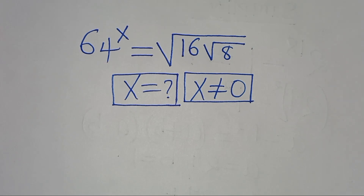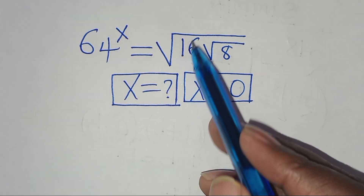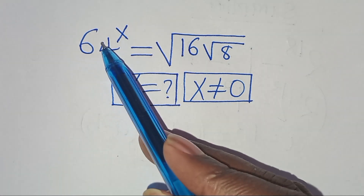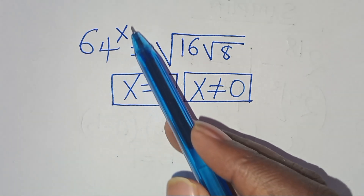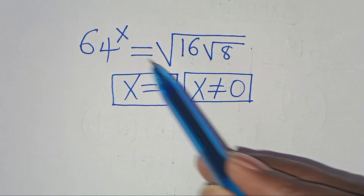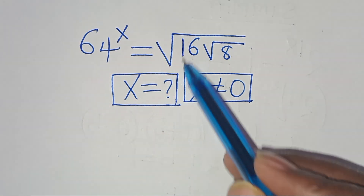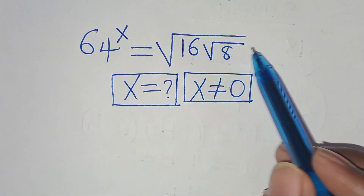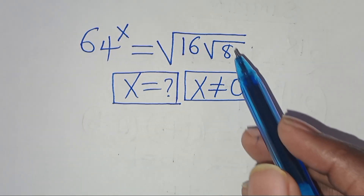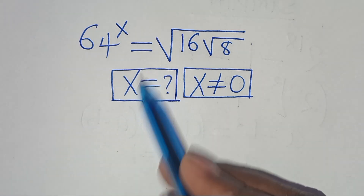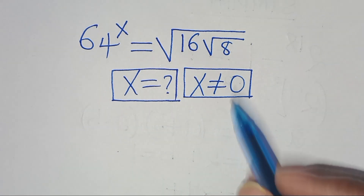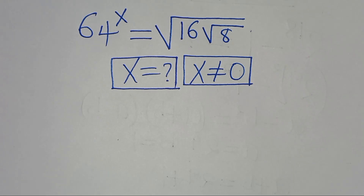Hello everyone, you are welcome to solve this nice square root math problem. We have 64 raised to the power of x, this is equal to square root of 16 times square root of 8. So what is the value of x, given that x is not equal to 0?